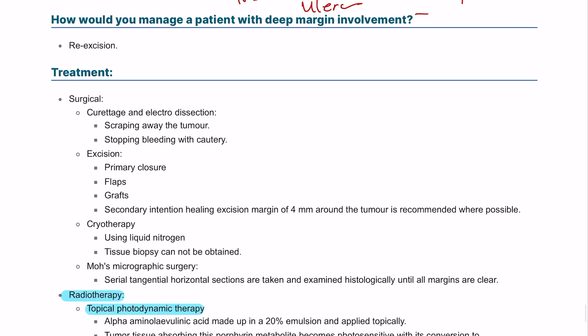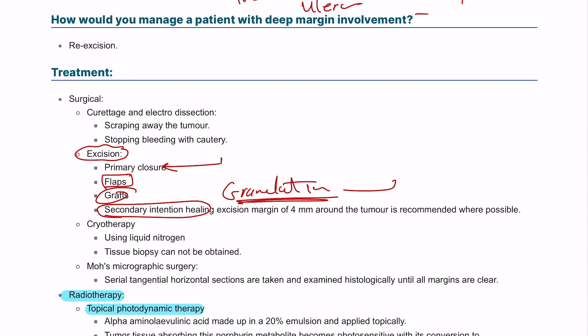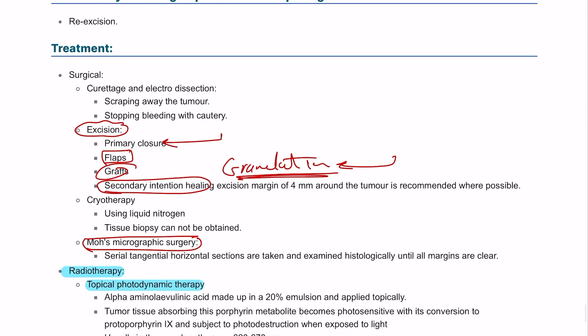For surgical management, we can do excision of the tumor with primary closure — which leads us to discuss complications of primary closure — or we can use flaps and grafts, or allow healing by secondary intention with granulation tissue formation. We can also do curettage, cryotherapy, or Mohs surgery, as explained in the previous video.